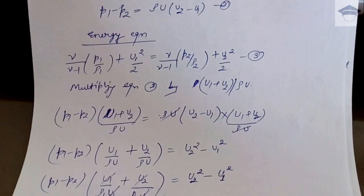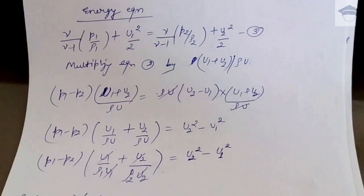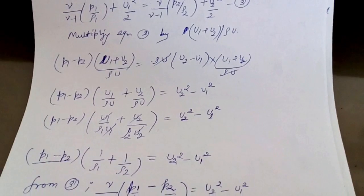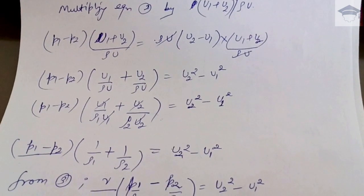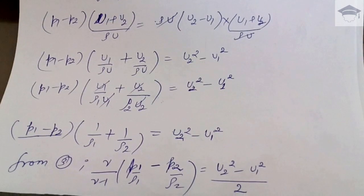From equation 3, γ/(γ-1) you can take common, so p1/ρ1 - p2/ρ2 = (u2² - u1²)/2.